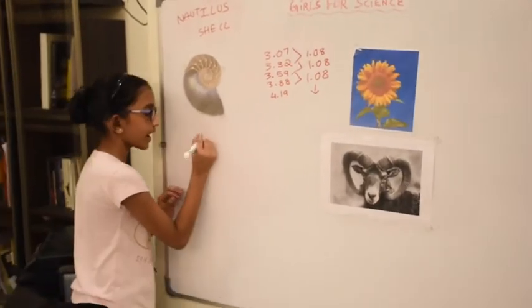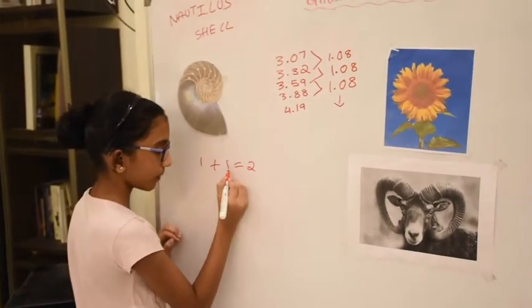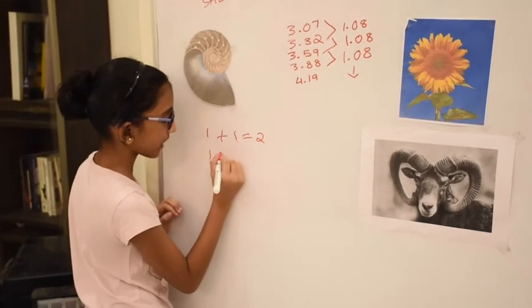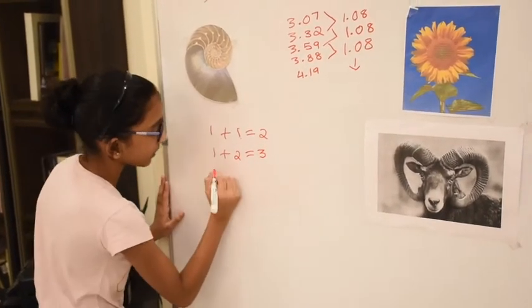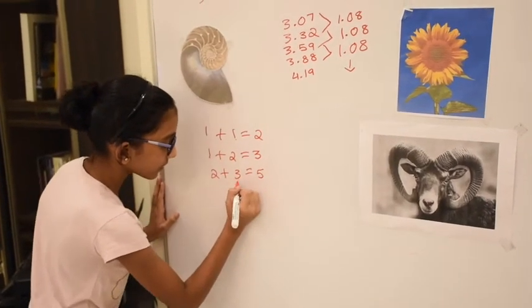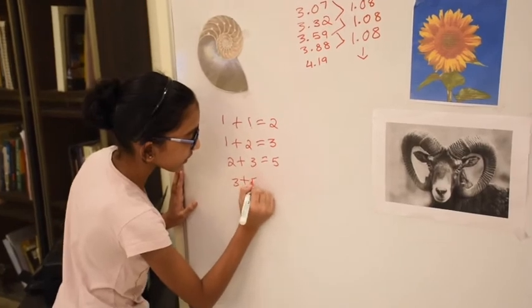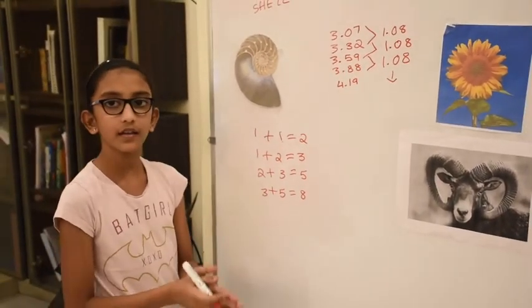If we take 1 and add it with 1, we get 2. And let's take this number and add it with the answer. And we get 3. Let's take 2 and add it with the answer. We get 5. Let's add 3 with the answer. So, we get 8. And there is no pattern in this number.